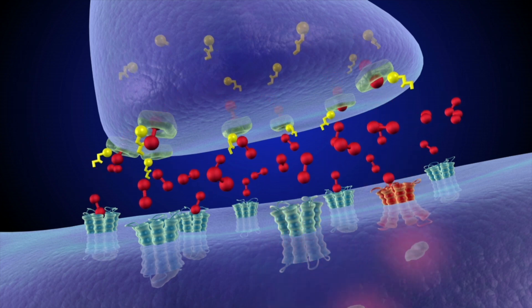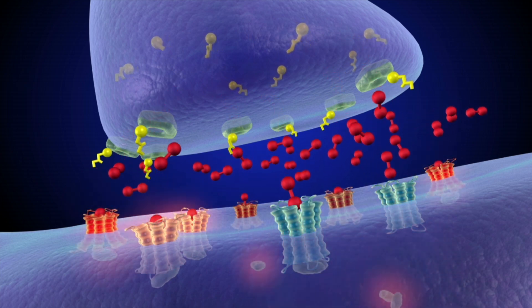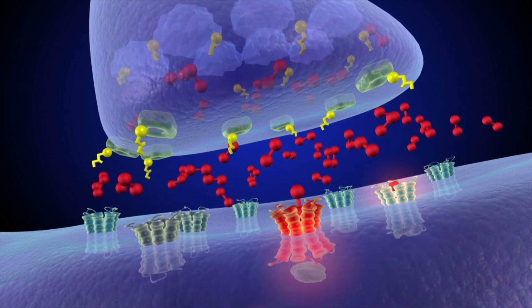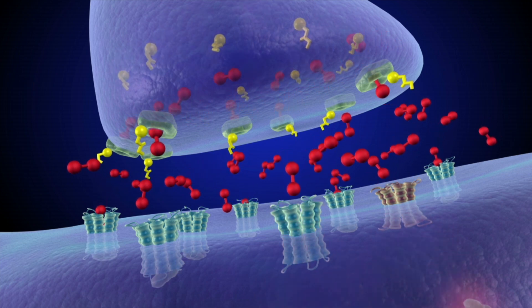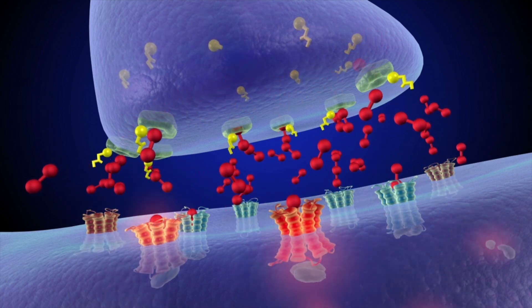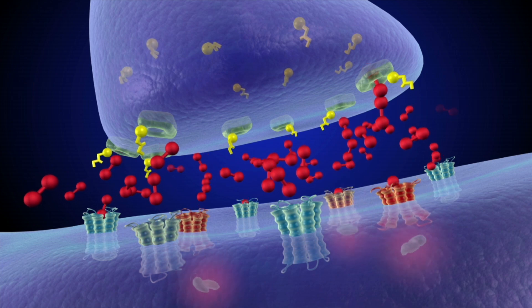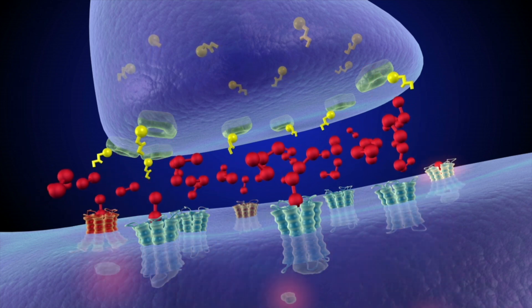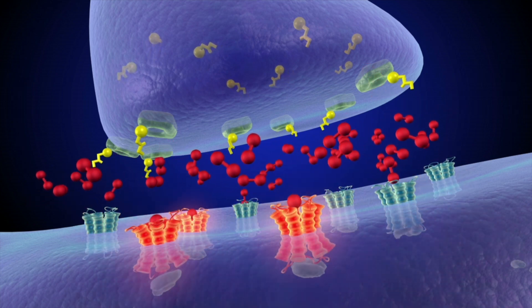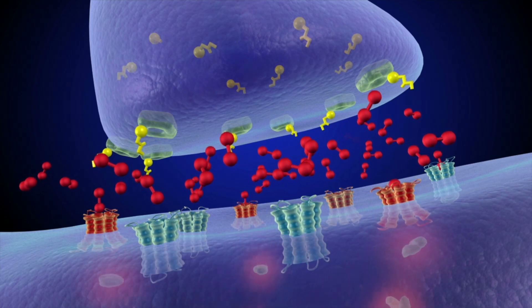Because so much dopamine remains in the synapse for such long periods of time, the post-synaptic cell is activated to dangerously high levels, causing the user to experience powerful feelings of euphoria, making meth incredibly addictive.